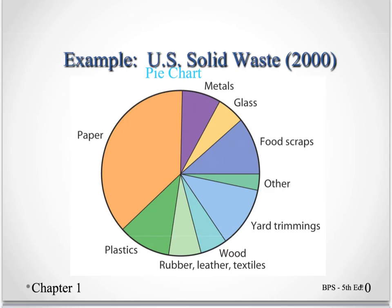This pie chart does not have the percentages labeled on each wedge, but it's still proportional. The highest percentage was paper, so the biggest wedge is paper. The smallest percentage was 'other,' so the smallest wedge is 'other.' When you have specific categories and everything else doesn't fall into them, you put it all into a category called 'other.'